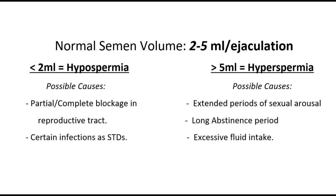Approximately 2 to 5 ml is considered as the normal volume of semen per ejaculation. Low semen volume, also known as hypospermia, could be an indication of partial or complete blockage in the reproductive tract, especially the seminal vesicles, and could also be the result of certain infections such as STDs. High semen volume, also called hyperspermia, can be caused by extended periods of sexual arousal and stimulation, abstinence from sex and masturbation, or excess intake of fluids.